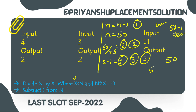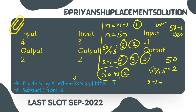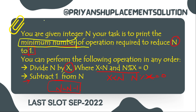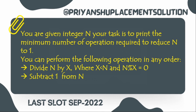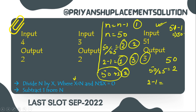For example, if N equal to 50, we divide 50 by 25 to get 2, then 2 minus 1 gives 1 — only two steps needed. The key point is minimum steps. We can take X as any number following the conditions. This is a very easy question and can be done with just if-else logic.